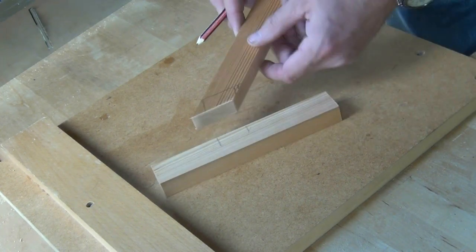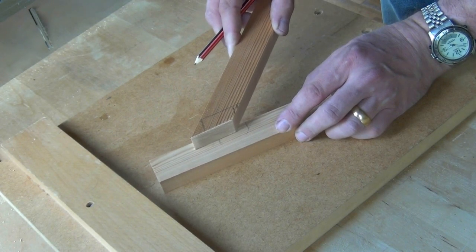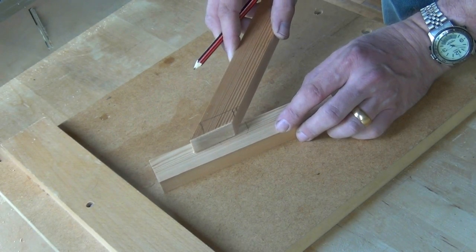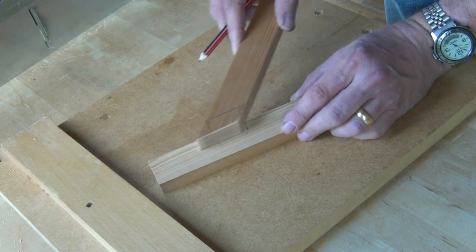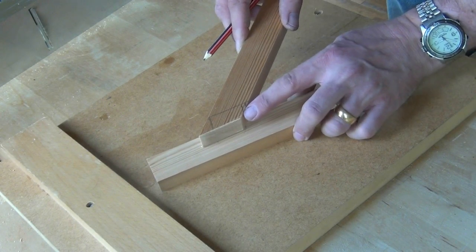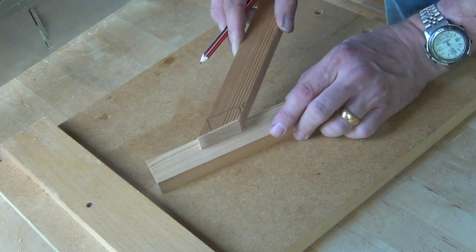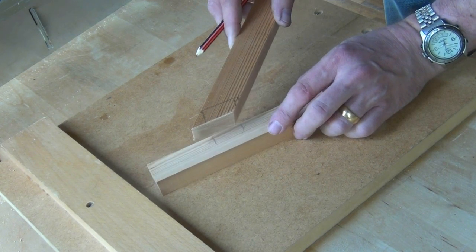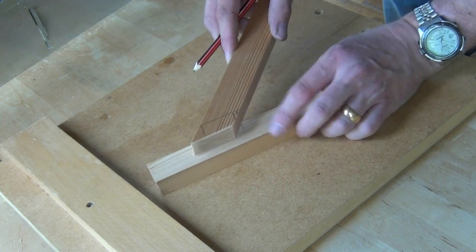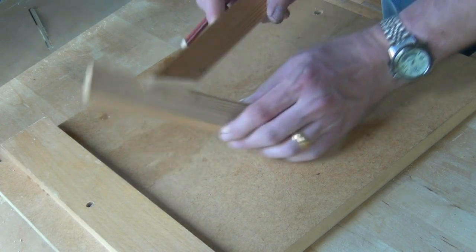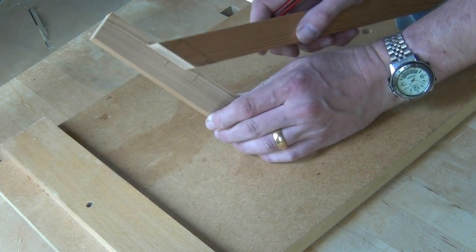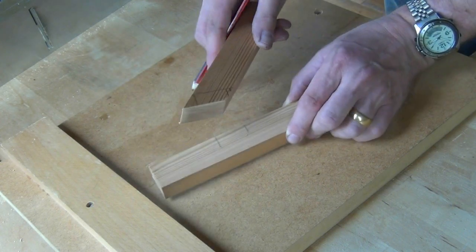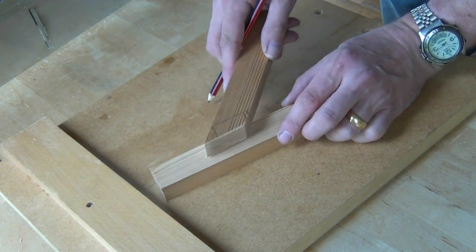And that helps to prevent the joint wandering one way or the other. If the joint is being pushed this way then you would have a ramp here which tends to force the joint open, whereas if we have a square shoulder on there any pressure down on this joint is not going to pull the pieces apart.